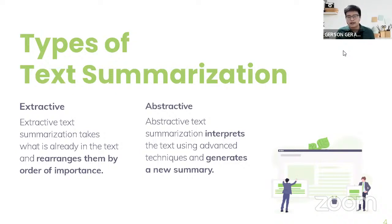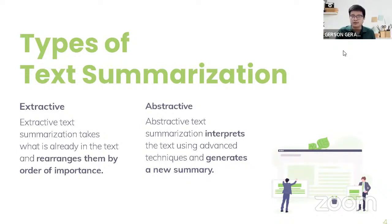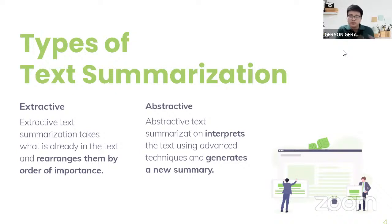For abstractive summarization, we instruct the model to first understand what the text is about, then using advanced NLP techniques it generates a new summary. In abstractive summarization, new words that do not come from the original text may be present. It's more of a human-like way of summarization — we first read the document, understand its context and subtext, then put it in our own words. This is much more difficult than extractive, but both areas have their own pros and cons.